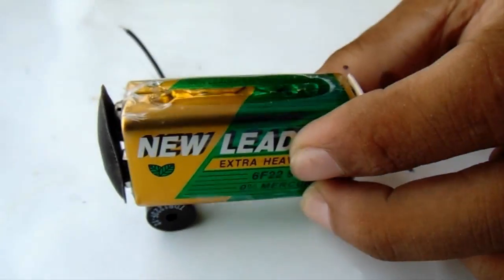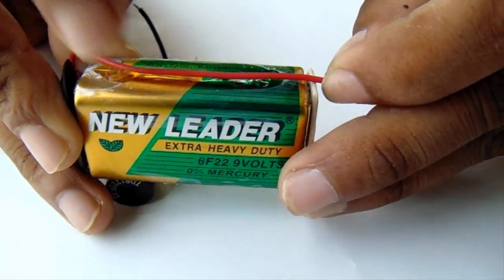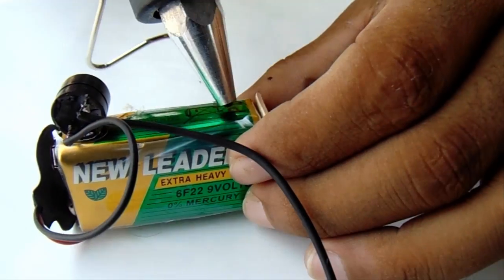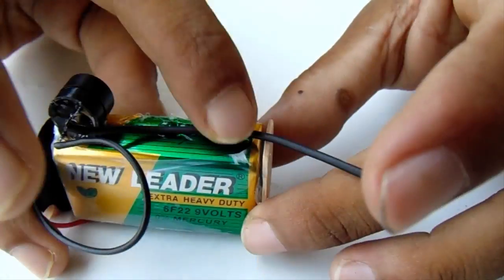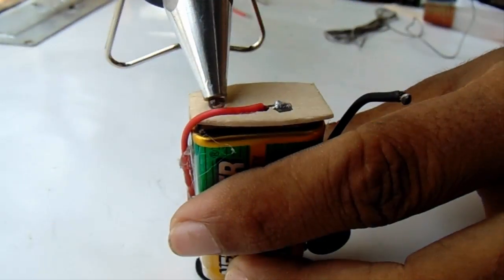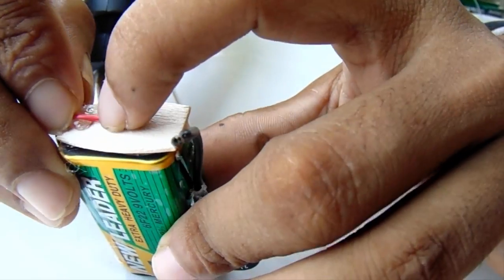Attach the 2 connected wires with the battery. Attach the 2 wire heads on the ice cream stick face to face.